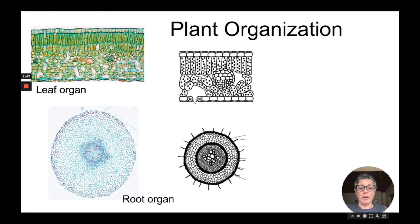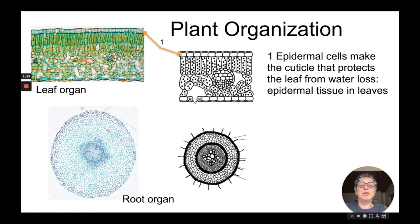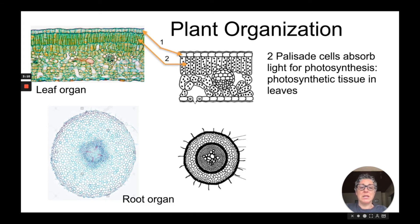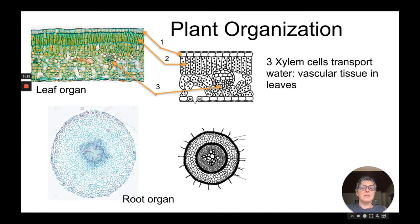Looking at the leaf organ in detail: epidermal cells form the cuticle and protect the leaf from water loss — these make up epidermal tissue. Palisade cells absorb light for photosynthesis, forming photosynthetic tissue. Xylem cells transport water, making up vascular tissue in the leaf. So a leaf is made up of three types of tissue: vascular, photosynthetic, and epidermal — and these together form the leaf organ in a plant.